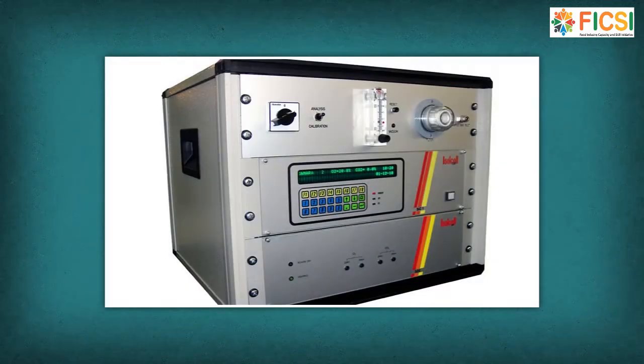Ethylene converters. Fruit varieties that are sensitive to ethylene under controlled atmosphere conditions, such as kiwis, require an ethylene converter. The ethylene converter removes ethylene from the cool cells using catalytic combustion, and ethylene can thus be maintained at any required level.